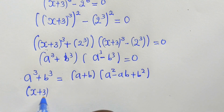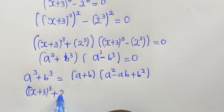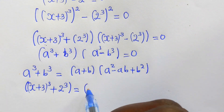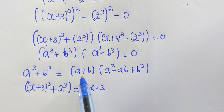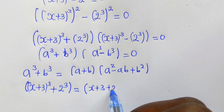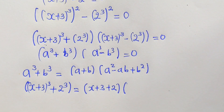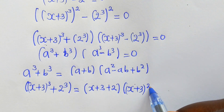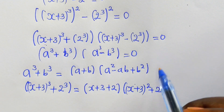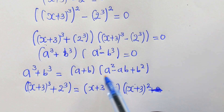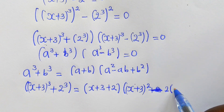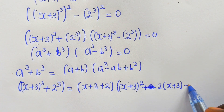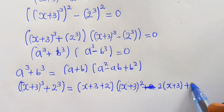For (x+3)^3 + 2^3, we identify a = (x+3) and b = 2. Applying the sum of cubes formula gives (a + b) = (x+3) + 2 = x+5, times (a^2 - ab + b^2) = (x+3)^2 minus 2(x+3) plus 4.